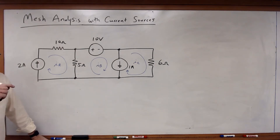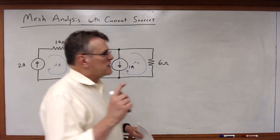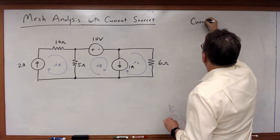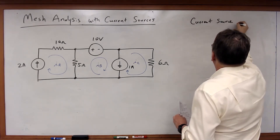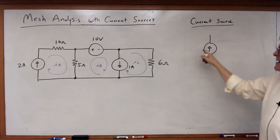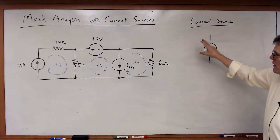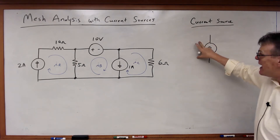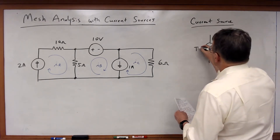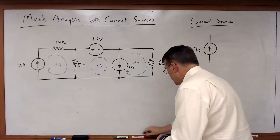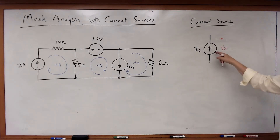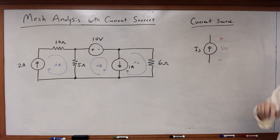So how do we deal with a current source in mesh analysis? In some ways this is familiar with something you've already seen. If you've got a current source in mesh analysis, in order to write the KVL equation, if you include that current source in the KVL equation you have to define a voltage variable across that current source. So if I've got some IS current source, I've got to define some voltage — I'm going to call it VS1. We have to define an unknown voltage variable for any current source.